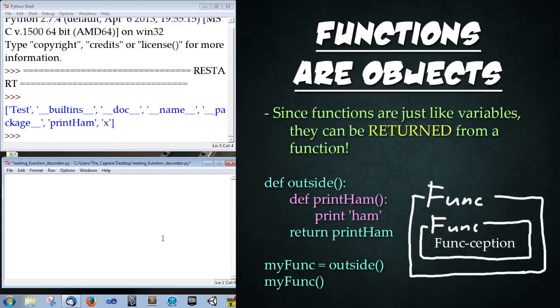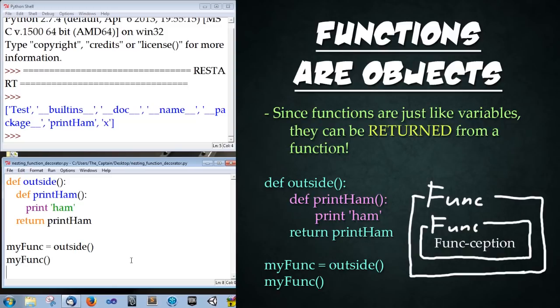I'm going to go ahead and delete this code and I want you to follow along with me. We're going to type def outside open close parentheses colon enter and then we're going to declare a second function within this one. So we're going to type def print ham our favorite function in the world open close parentheses colon enter and then just print of course ham enter unindent so we're outside of the second function and within only within the first function and then we're just going to type return print ham and then we're not going to include any parentheses we're not actually calling function we're returning it okay. We're going to go ahead and exit the function and then type my funk is equal to outside open close parentheses enter and then type my funk open close parentheses and go ahead and save and then run it perfect.